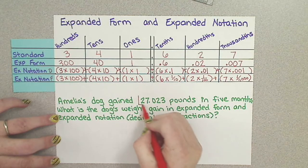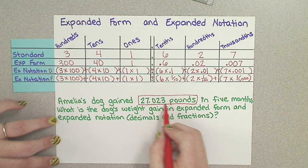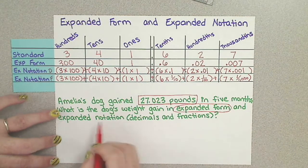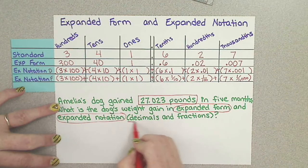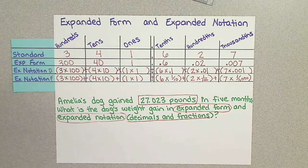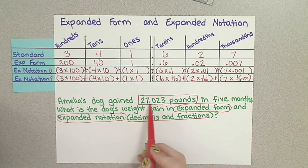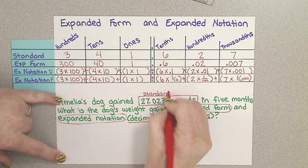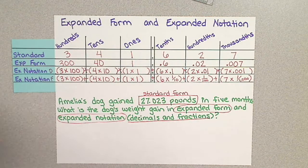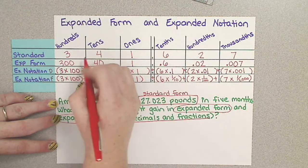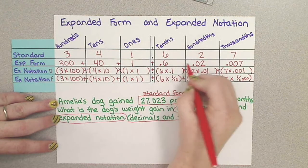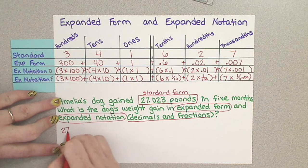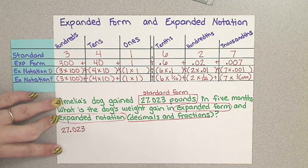Amelia's dog gained 27 and 23 thousandths pounds in 5 months. What is the dog's weight gain in expanded form and expanded notation, decimals and fractions? Alright, so they've already given us the standard form, 27 and 23 thousandths pounds. So I'm even going to write standard form above that. And now I need to look at expanded form. Remember, expanded form is where you are adding the values of each together. So that's pretty straightforward.